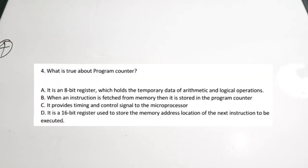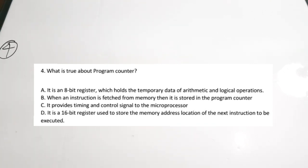The fourth question: what is true about the program counter? Option A — it is an 8-bit register holding temporary data of arithmetic and logical operations — is incorrect. Option B — the instruction fetched from memory is stored to the program counter — is also incorrect. Option C — it provides timing and control signals — is wrong. Option D — it is a 16-bit register used to store the memory address location of the next instruction to be executed — is the correct answer.